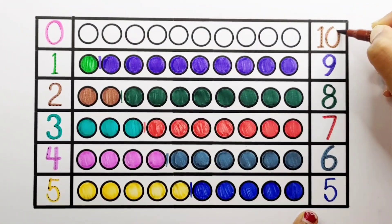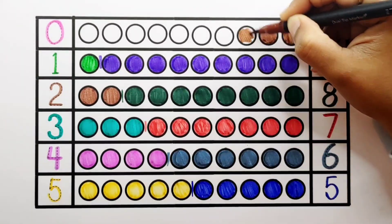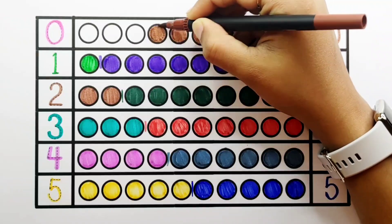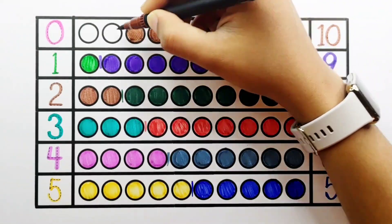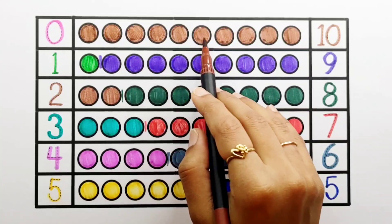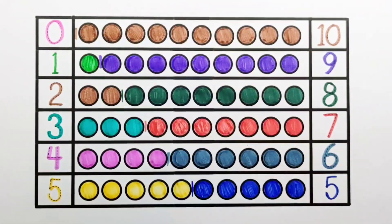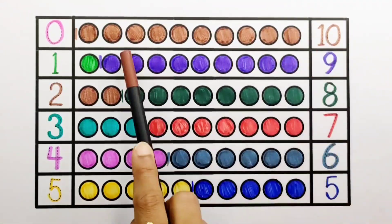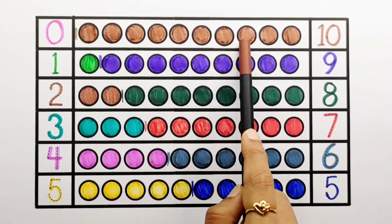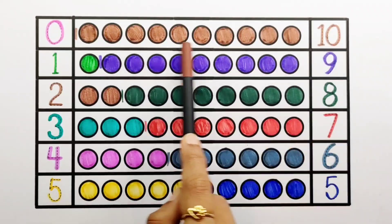10 — 1, 2, 3, 4, 5, 6, 7, 8, 9, 10 — 10 balls. 0 plus 10 equals 10.